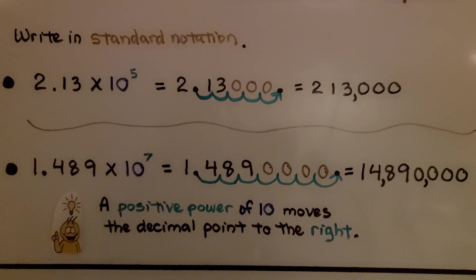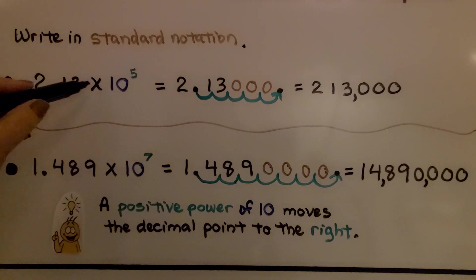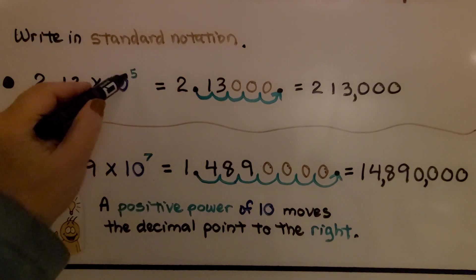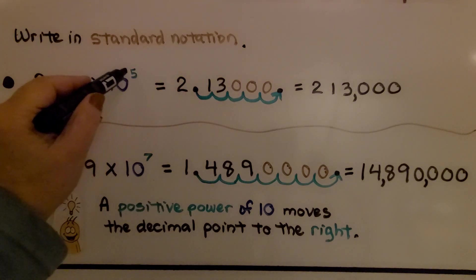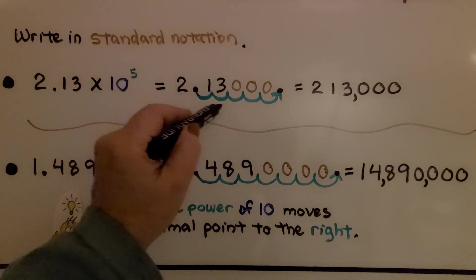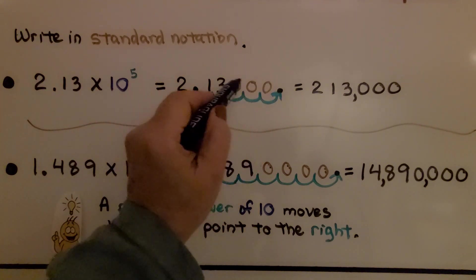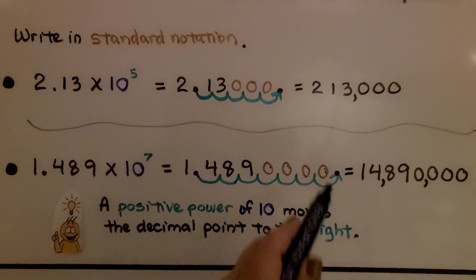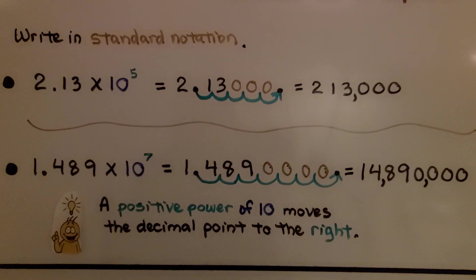Here we need to write in standard notation: 2.13 times 10 raised to the fifth power. We take 2.13 and, since we have a positive exponent of 5, we do 5 hops to the right — 1, 2, 3, 4, 5 — using three placeholder zeros. We get 213,000 in standard notation.